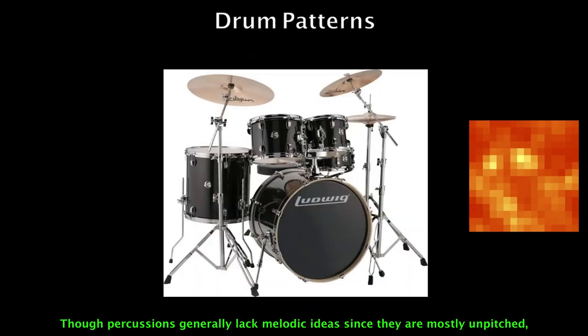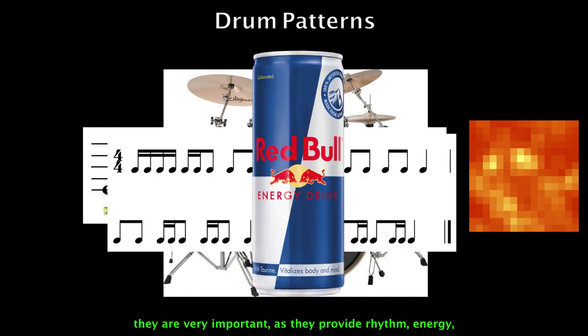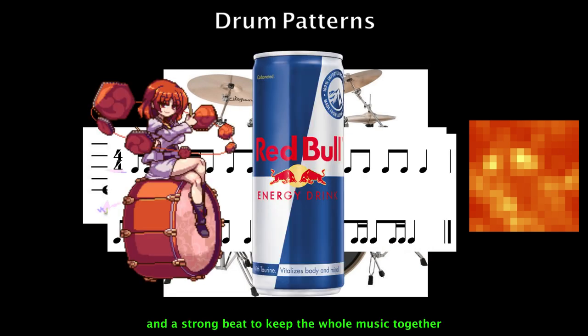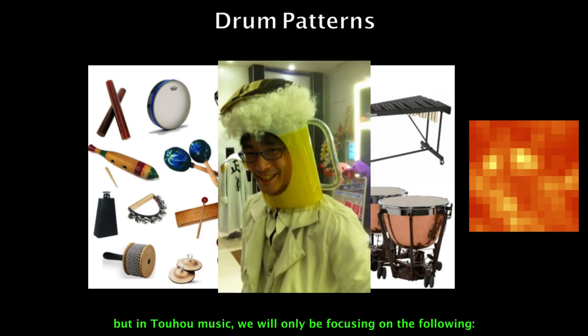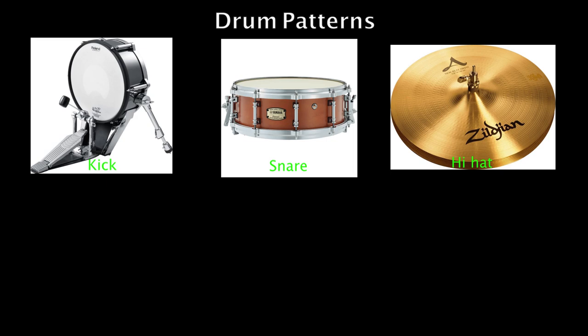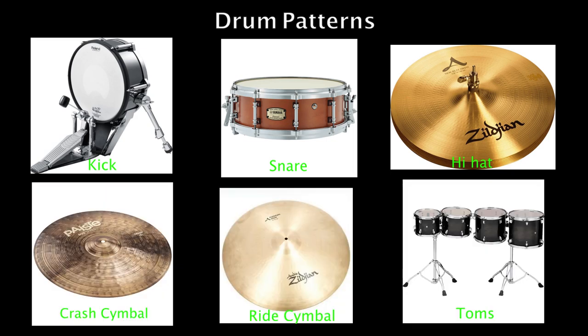Though percussion instruments aren't melodic, they are very important as they provide rhythm, energy, and a strong beat to keep the whole music together. There are many different types of percussion instruments, but in Toho music we will only be focusing on the following: kick, snares, hi-hats, crashes, rides, and toms.